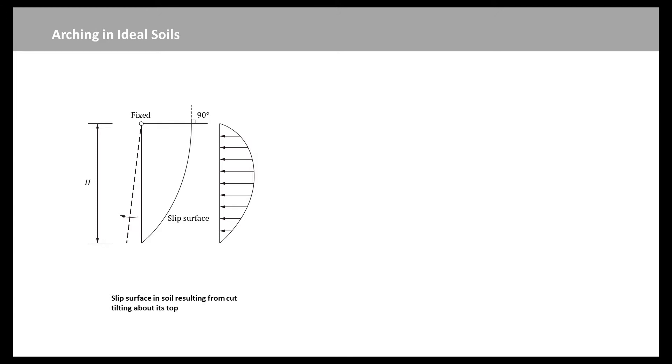For example, this figure shows a vertical cut rotates around its upper edge. The slip surface with curved shape intersects the horizontal surface of the soil at right angles. A roughly parabolic distribution of active earth pressure is applied on the yielding cut. In this video, we will introduce the arching effects to determine the non-linearity of the active earth pressure.